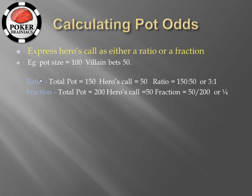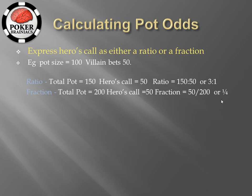With the fraction method, the difference is that you include hero's potential call in the total pot. So the total pot is 200: villain bets 50, pot size is 100 giving 150, plus hero's call of 50 equals 200. Hero's call is 50, so we take 50 over 200, which simplifies to 1 over 4. Looking at these two results — 3 to 1 as the ratio and 1/4 as the fraction — I just find it a lot easier to see that 1 in 4 equates to 25% than to see that a 3 to 1 ratio equates to 25%.